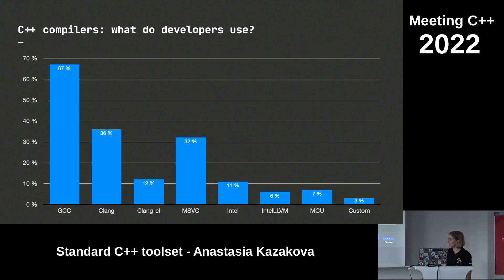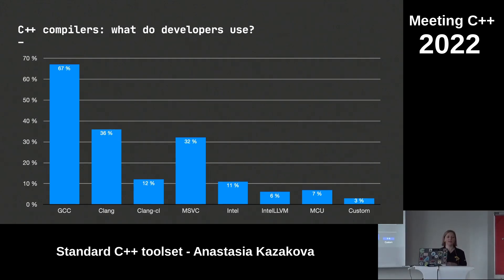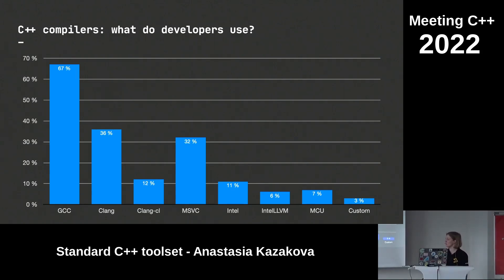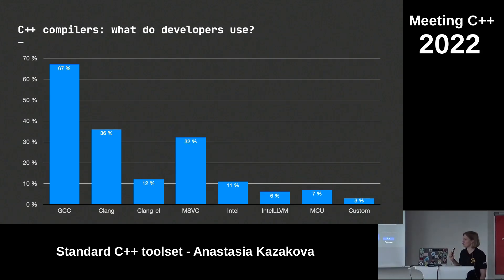What do developers actually use? These numbers are from our 2022 survey, not yet published. GCC is winning because many people use GCC-based compilers, especially in embedded. Clang and Clang-cl were put as separate options this year since there was confusion about which to select. Intel LLVM adoption is growing quite fast — I'd expect it to be much bigger next year while regular Intel falls, since Intel themselves encourage migration to the new compiler. Microcontroller-specific compilers aggregate to about 7%, and custom compilers to about 3%.